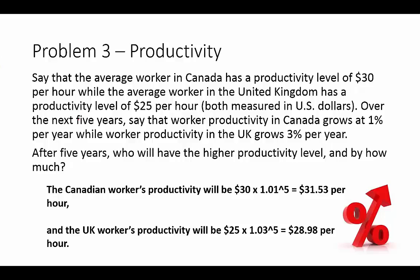The question is: after five years, who will have the higher productivity level and by how much? The Canadian worker's productivity uses the same growth formula — this is one percent, this is the number of years, this is the original amount. For the UK, they start with lower productivity but grow at a higher rate over the same five years. Were they able to catch up? No. We take the difference to find by how much — the UK made up some of the gap but not all of it.